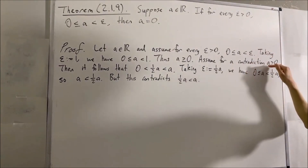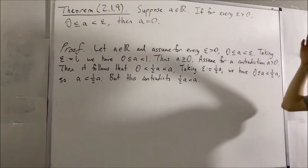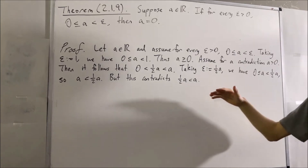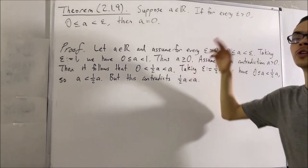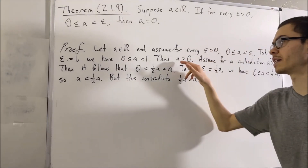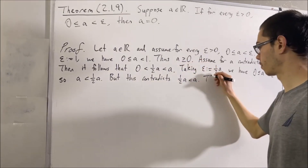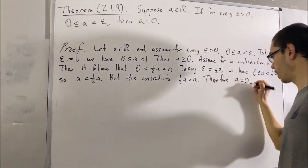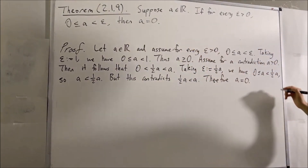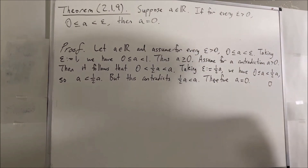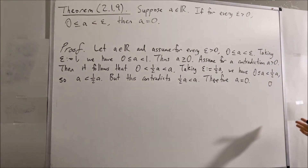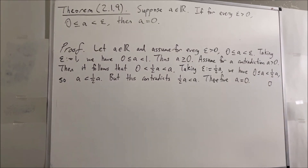Our assumption that A is greater than 0 led us to this contradiction, so we've eliminated the possibility that A is greater than 0, and we must have that A is equal to 0. That's exactly what we wanted to prove, so this completes the proof. That's pretty much the idea of how you could prove this theorem, and that's it for this video.